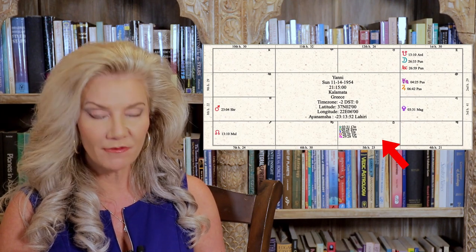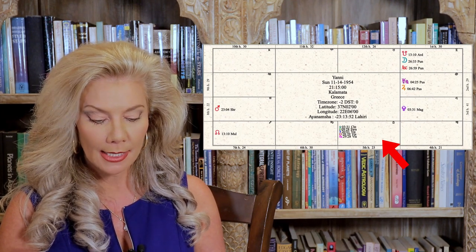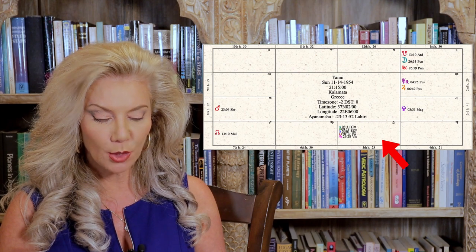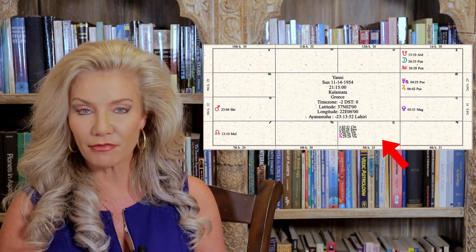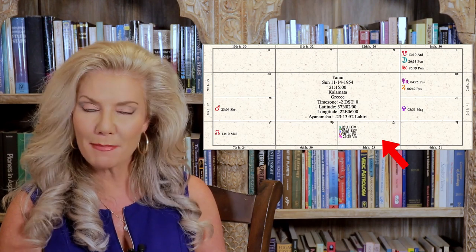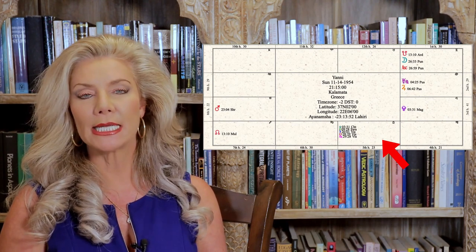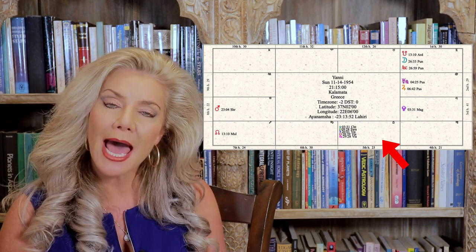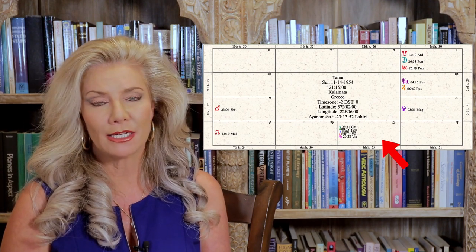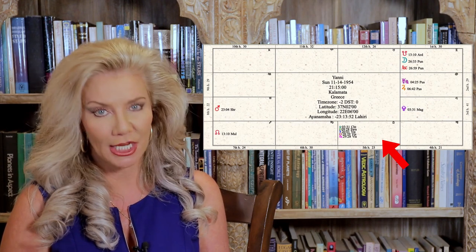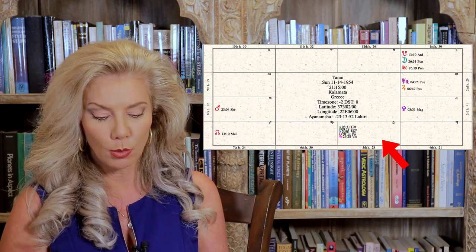He has got Venus, Sun, Saturn, Mercury, and Neptune all in Libra, fifth from the moon. It's remarkable because Venus is in its own sign. Saturn is exalted in Libra. And the fifth house is the house of creativity. This man was a genius creatively. Truly he was.